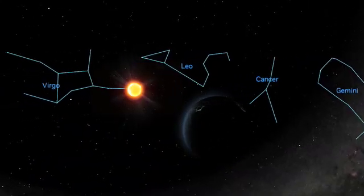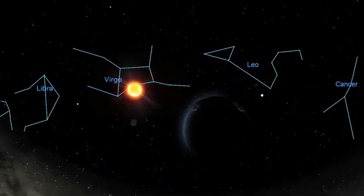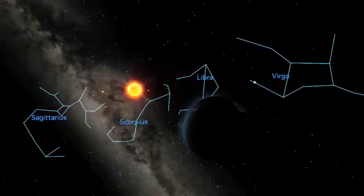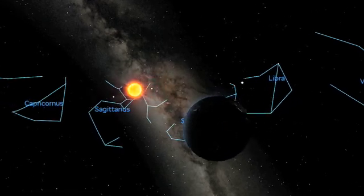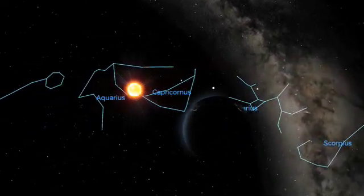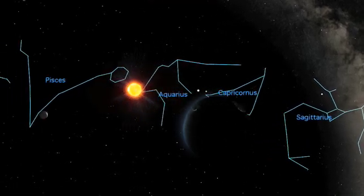Well, one way, called a sidereal year, measures our orbit against the distant stars. As viewed from the Earth, our orbit causes the Sun to appear to move through the constellations of the zodiac on a path called the ecliptic.